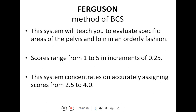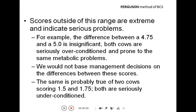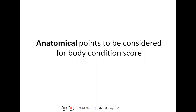This method focuses on accurately assigning scores from 2.5 to 4.0, which is the main range of interest. Scores outside this range are extreme and indicate serious problems. For example, a cow scoring 4.75 or 5.0 is seriously over-conditioned and prone to metabolic problems. Similarly, cows scoring 1.5 or 1.75 are seriously under-conditioned and must be considered for management.